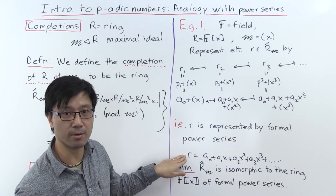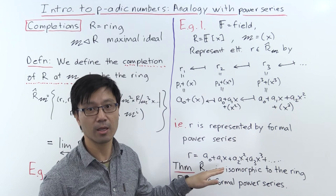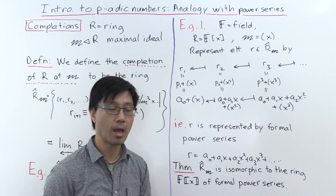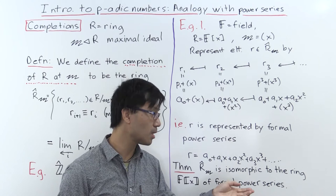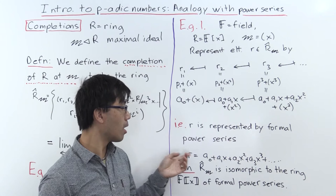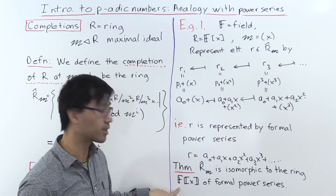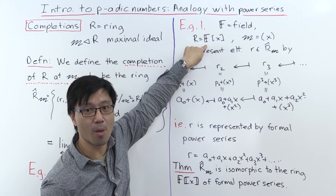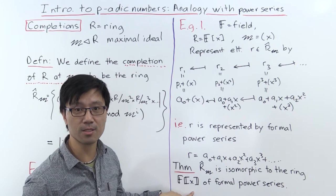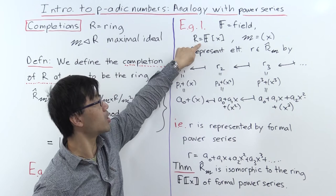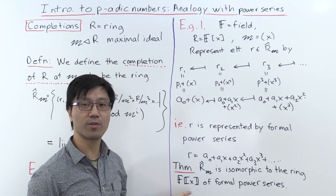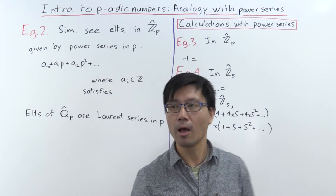To get, say, the third term of the tuple from a formal power series, you look at the Taylor approximation to the appropriate order — just the first few terms. So there's a complete bijection between elements of this completion and formal power series. You can add them by adding corresponding coefficients, and multiply using the Cauchy product formula. With that addition and multiplication, this set of formal power series becomes a ring, denoted F[[x]] — the ring of formal power series. The completion of this polynomial ring at (x) is in fact isomorphic to F[[x]].